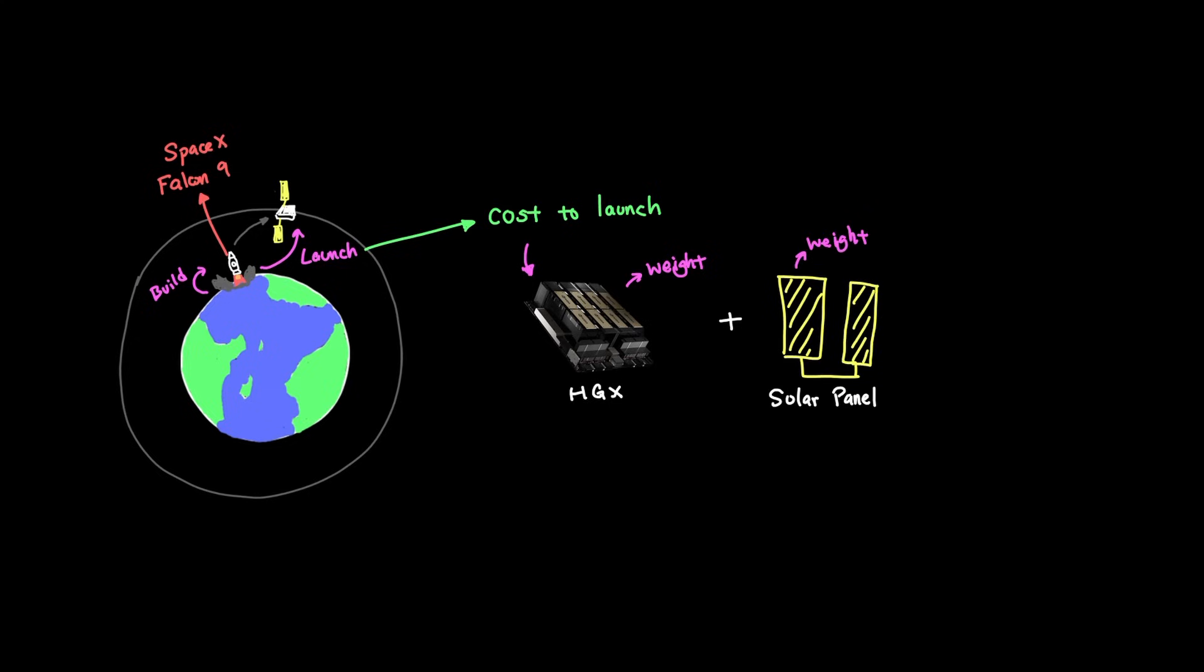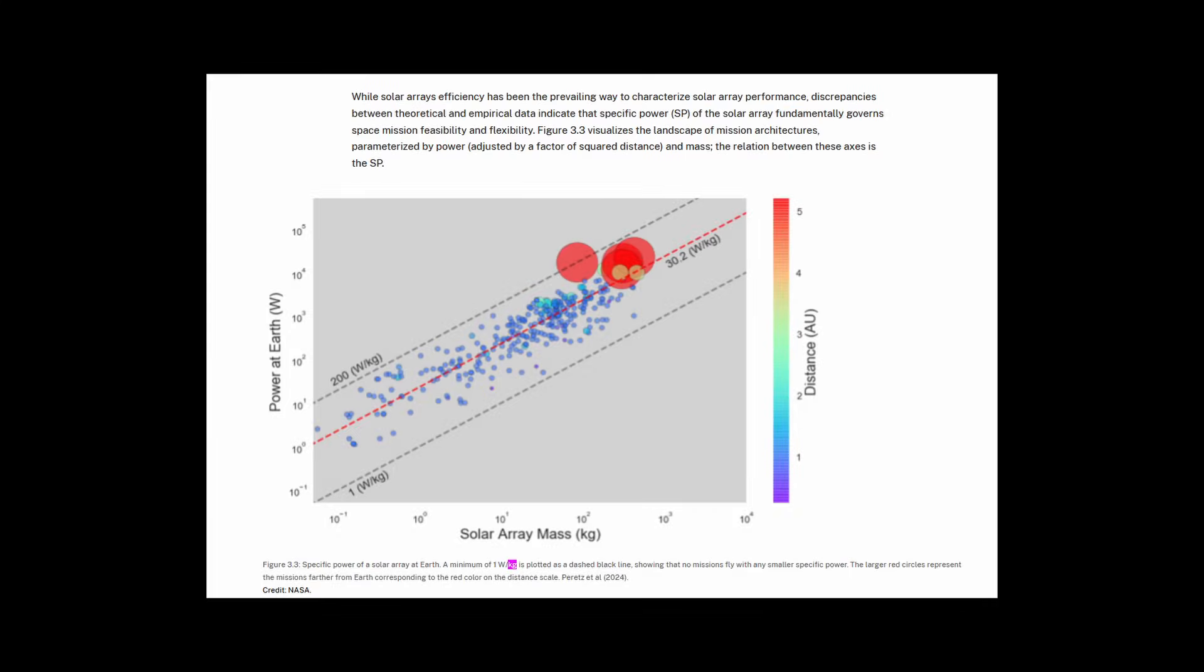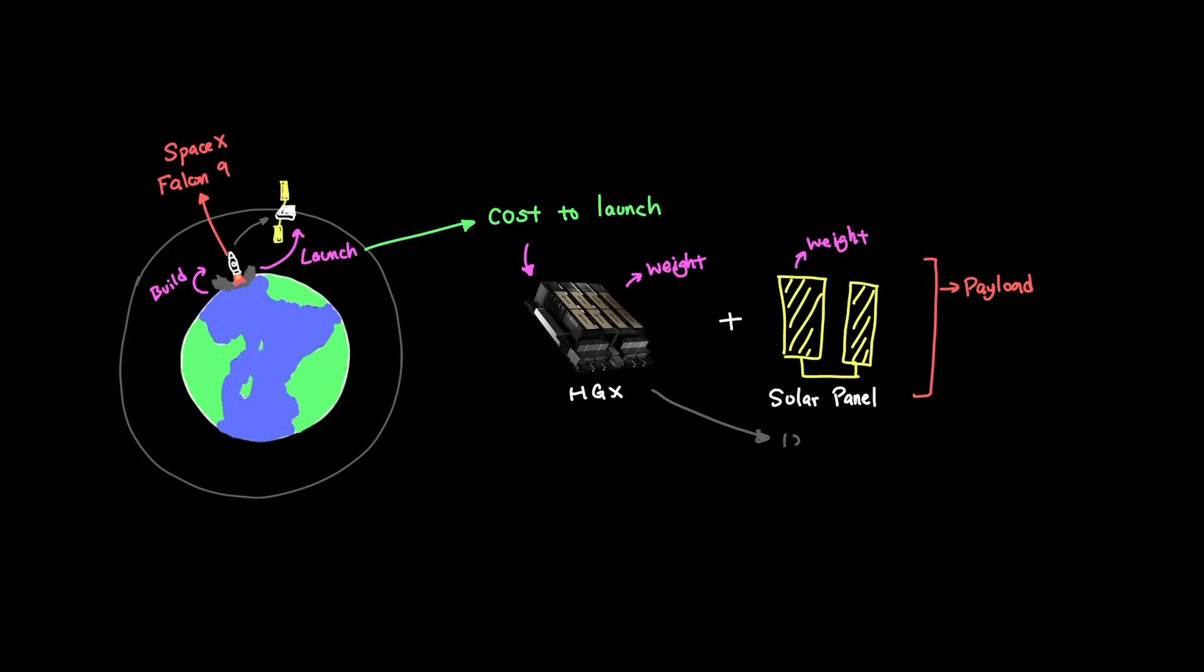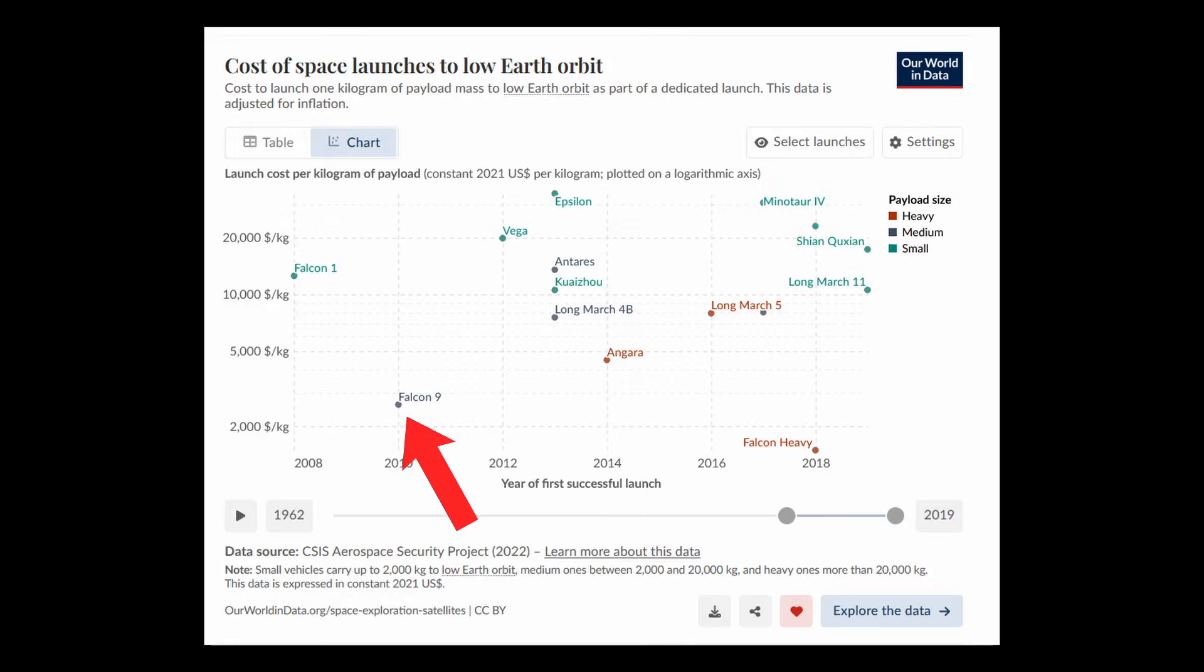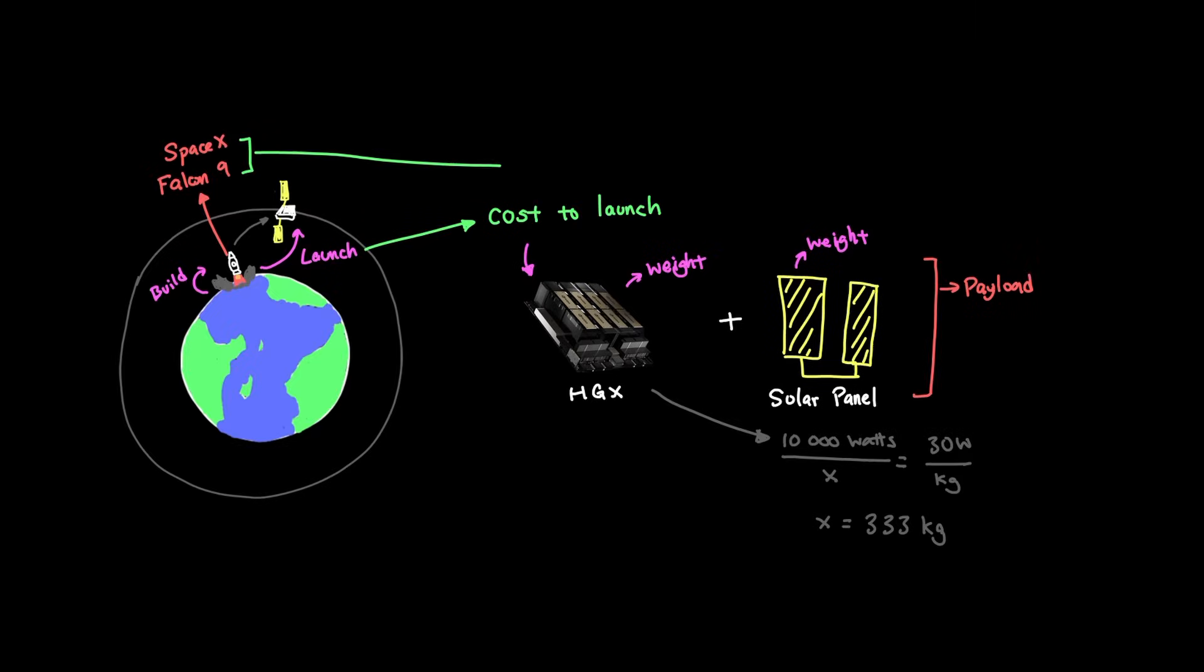But this cost only accounts for the build cost. We still haven't considered the cost to launch it into orbit. Let's say we want to use the SpaceX Falcon 9 as our provider. How much will it cost to launch this into orbit at the current pricing? In order to figure out the cost to launch this thing, we need to actually look at the weight of both the HGX unit and the solar panel. So how heavy is our payload? Let's figure out the weight of the solar panels first. Most manufacturers tend to converge around 30 watts per kilogram. So since we need 10,000 watts to power our compute, our total projected weight for the solar panel is around 333 kilograms. And the Falcon 9 costs around $2,750 per kilogram, which means the solar panel alone will cost around $915,000 to launch.